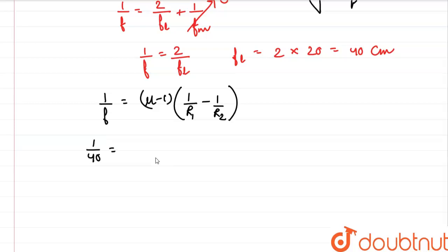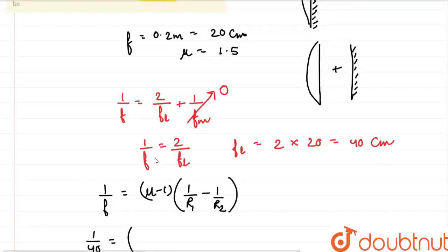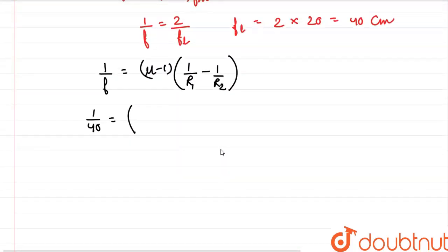the refractive index is given to us as 1.5. So 1.5 minus 1 into, as this is our lens, its center of curvature lies in the positive direction. So it will be 1 by r minus, and the other side is plane, so 1 upon infinite.